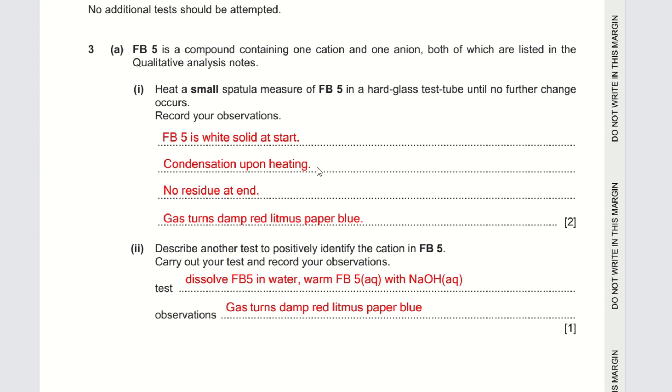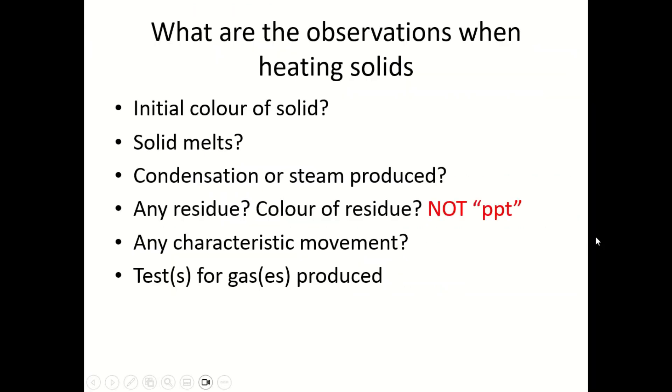The last one would be a gas will be produced, so we have to identify the gas. Go through the qualitative analysis notes to know which gases are possible and test the gas to identify it. This gas turns the red litmus paper blue, so this is ammonia gas. To recap, these are the six questions you ask yourself every time you want to record down observations when heating solids.